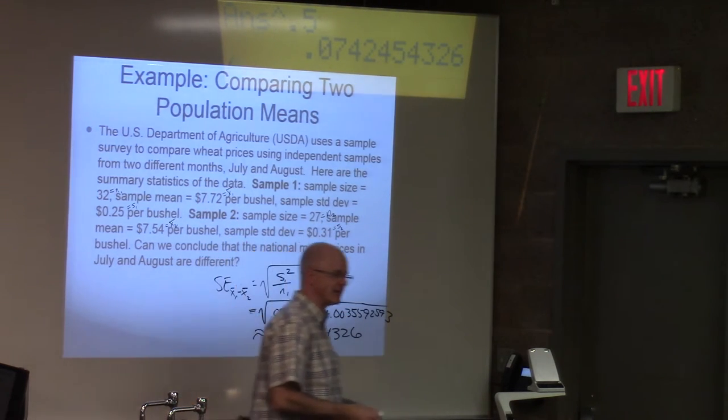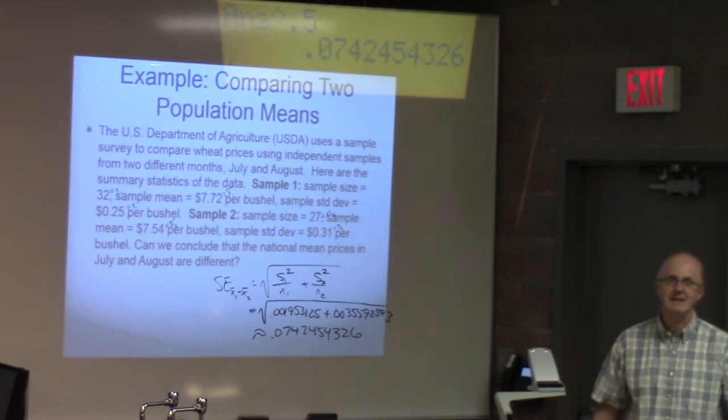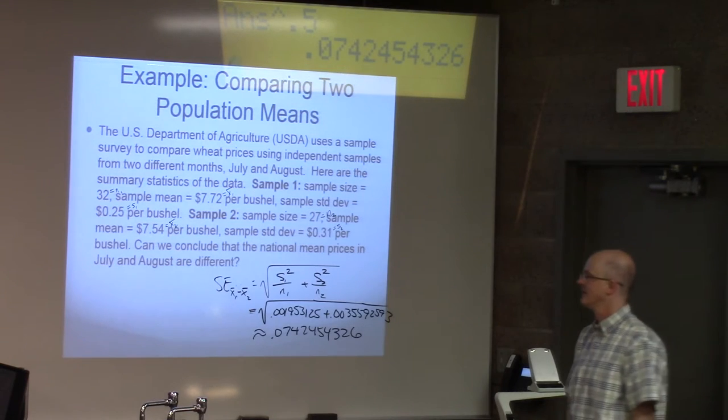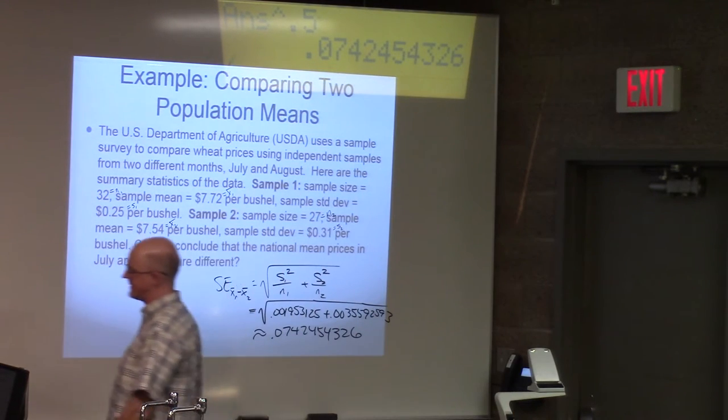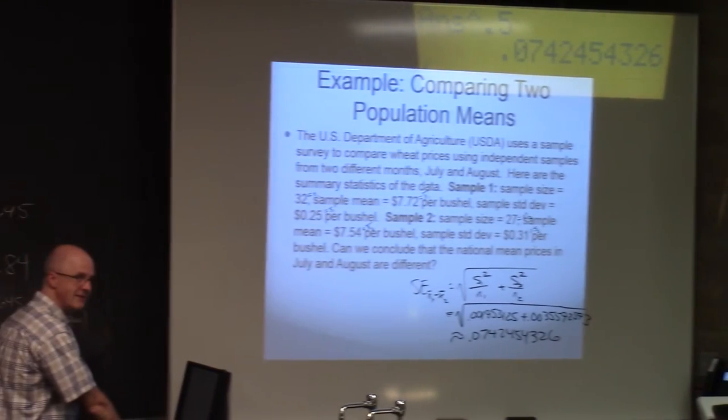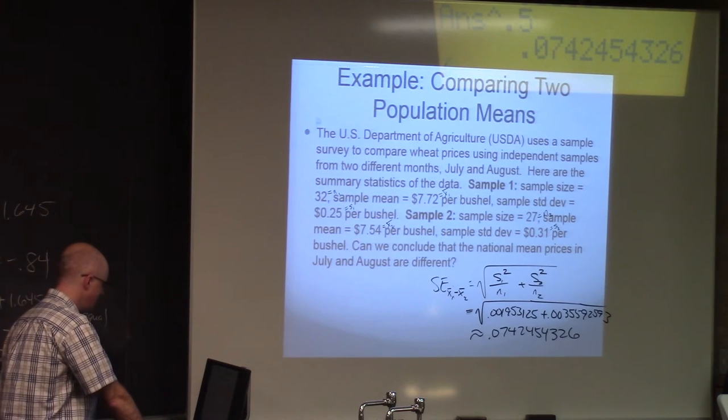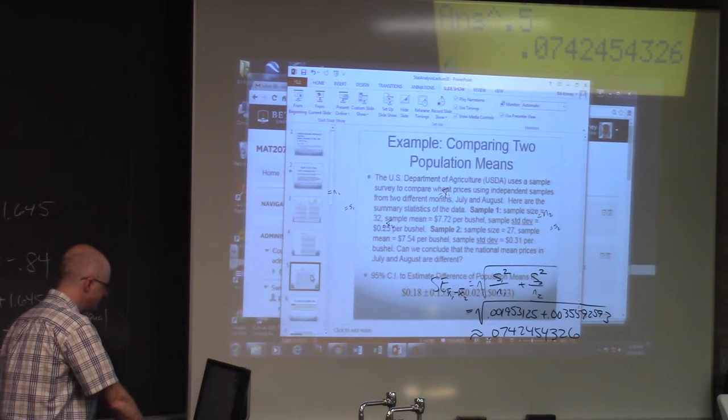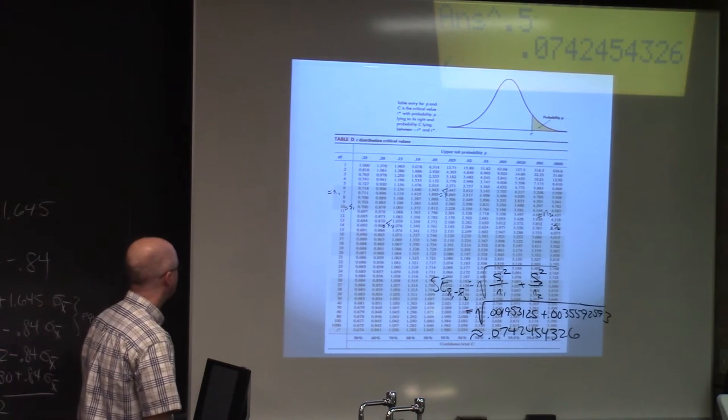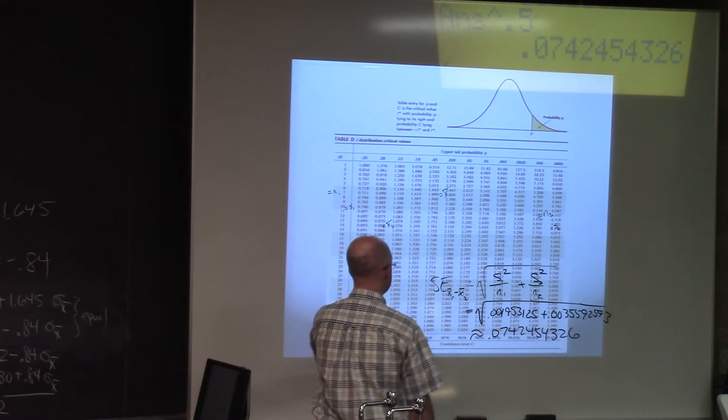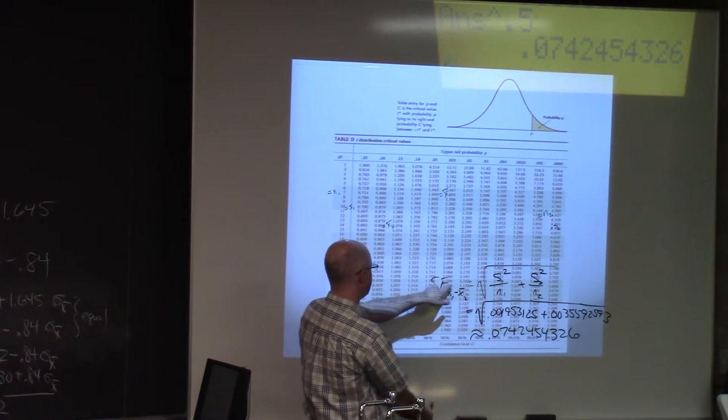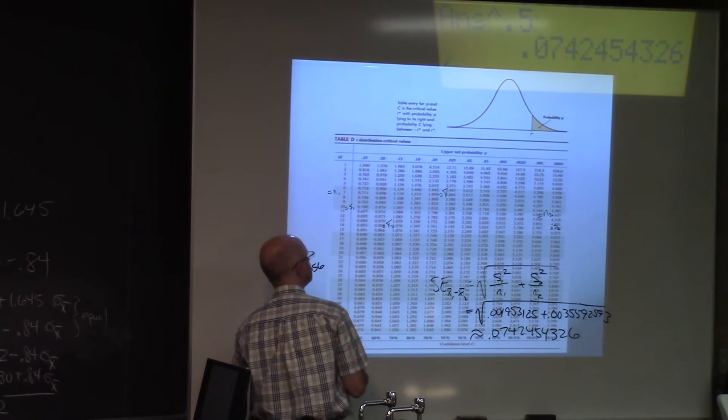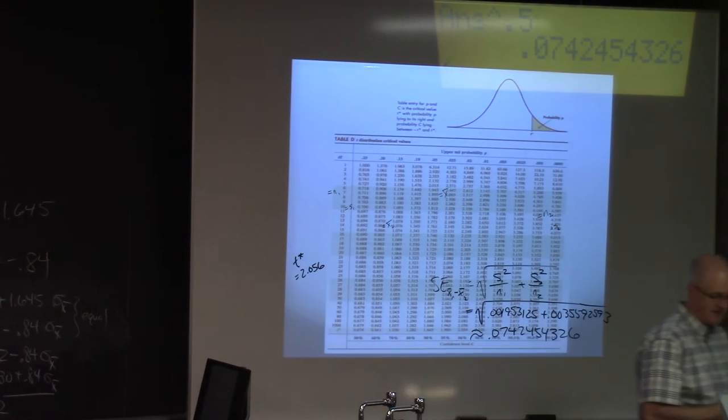Add these numbers up. That's the thing I take the square root of. Raise it to the 0.5 power. The standard error is about 0.0742454. We want to multiply that for the confidence interval by T star. What's T star? Go to the T table. We're using 26 degrees of freedom, that's the smaller of 32 minus 1 and 27 minus 1. For 95% confidence and 26 degrees of freedom, it's 2.056.